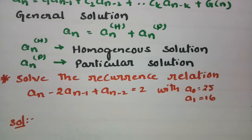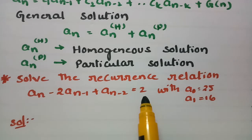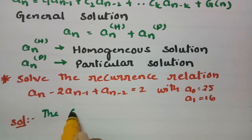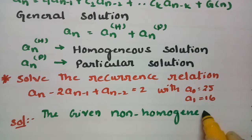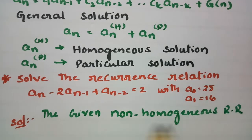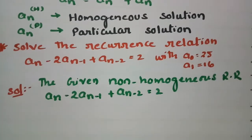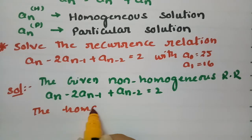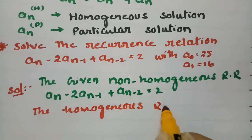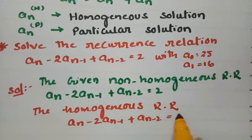This is an important question: solve the recurrence relation a_n - 2·a_{n-1} + a_{n-2} = 2. When the right-hand side has a non-zero value, we say it is a non-homogeneous recurrence relation. The corresponding homogeneous recurrence relation is a_n - 2·a_{n-1} + a_{n-2} = 0.